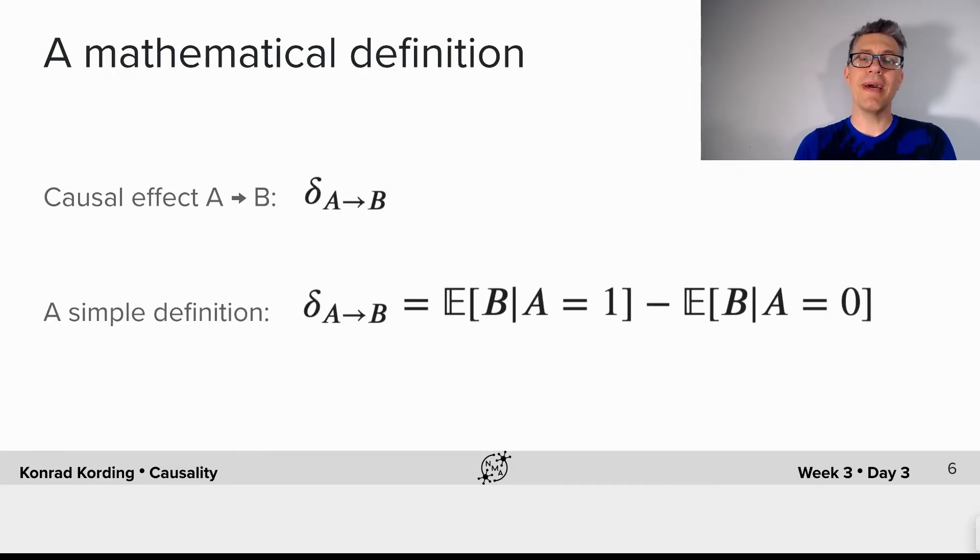So, let's look at the mathematical definition here. A causal effect exists from A to B of effect delta A to B. And what's the definition here? Well, the causal effect of A to B is the expected value of B if A is 1 minus the expected value of B if A is 0. That is arguably the treatment effect or the effect that we get if we modify A.